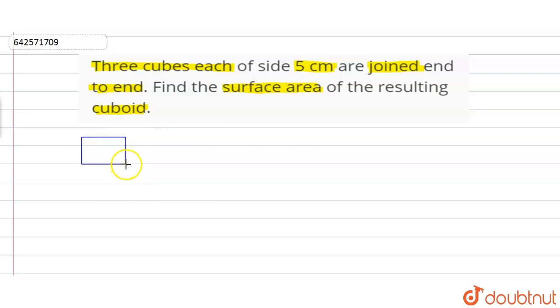Three identical cubes are joined end to end to form a bigger cuboid. Side of each cube is 5 cm, 5 cm and 5 cm. They are joined end to end.